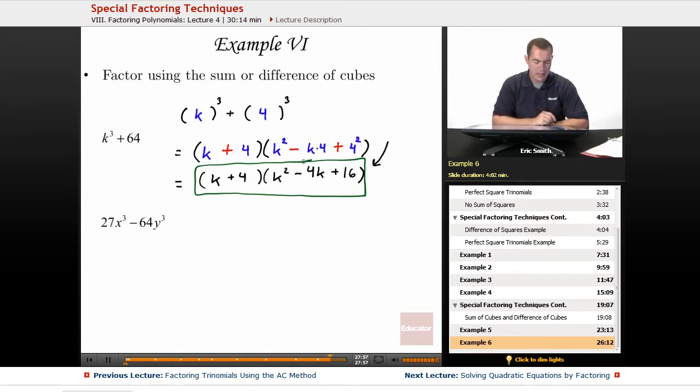All right, let's try one last one. This one is 27x cubed minus 64y cubed. So something cubed plus something cubed. All right, what cubed would give us a 27? That must be a 3. And x cubed would give us an x cubed. Okay, so that looks good. To get a 64, this must be a 4y. Oops, make sure we have our negative sign in there.